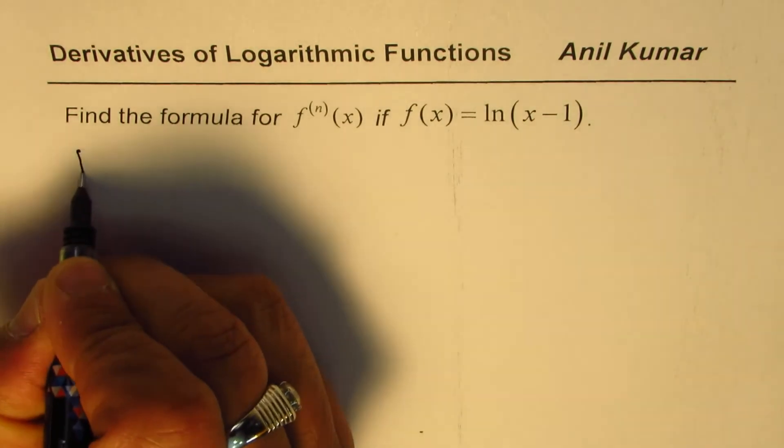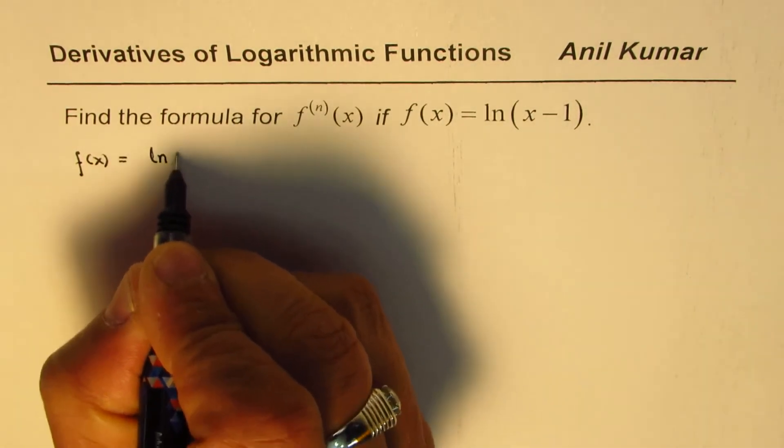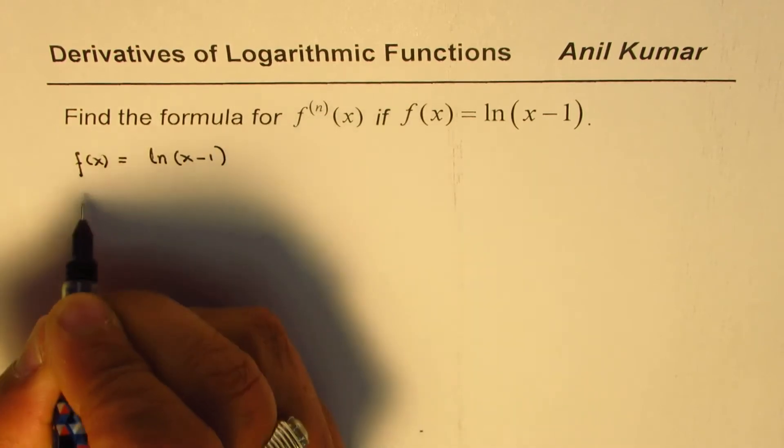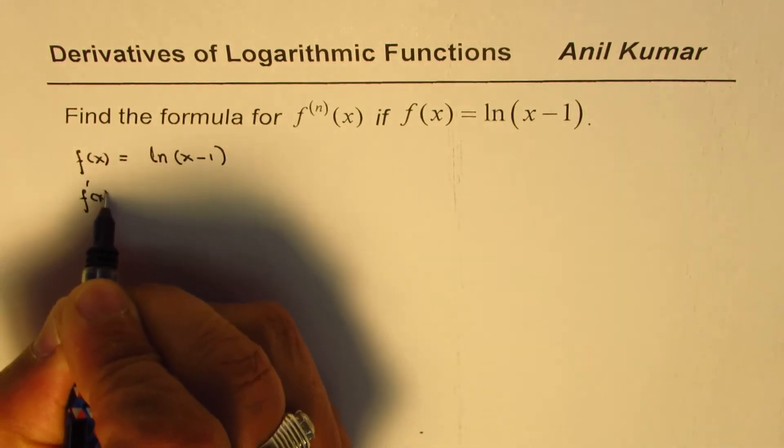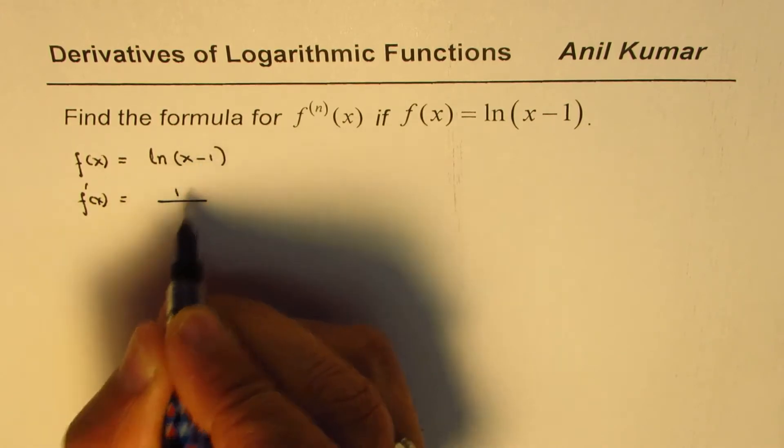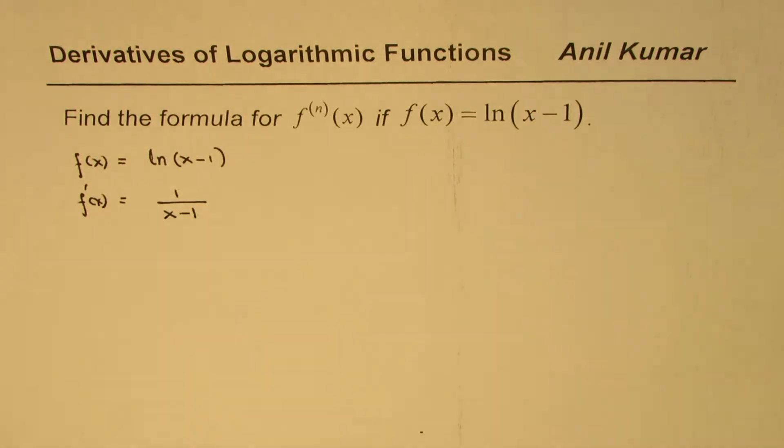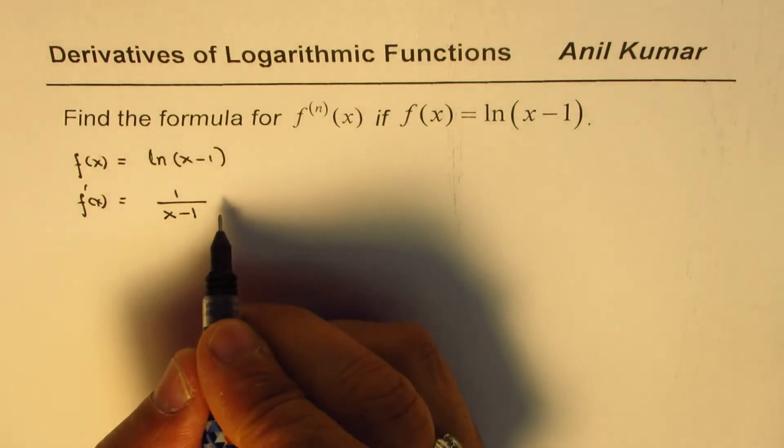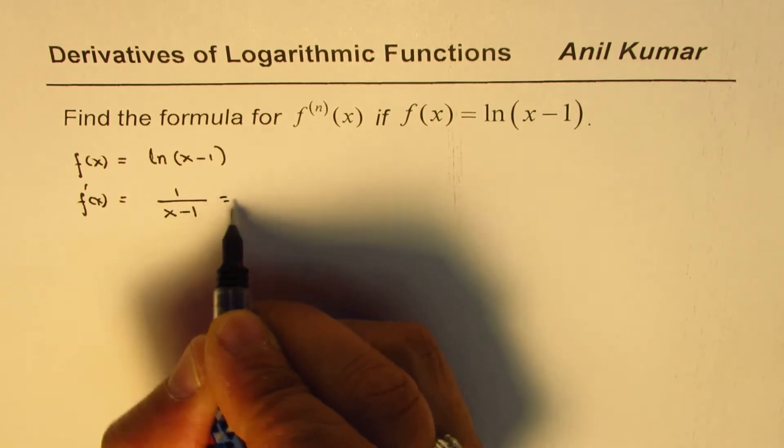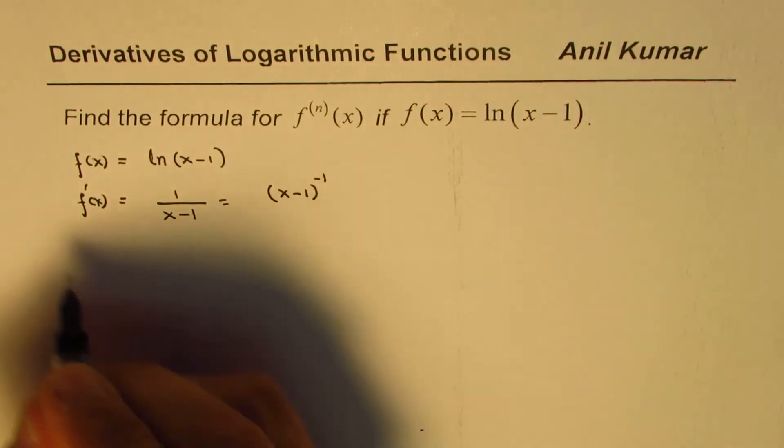So we are given the function f(x) = ln(x-1). The first derivative of this function will be 1/(x-1). That is the first derivative, which you could write as (x-1)^(-1).